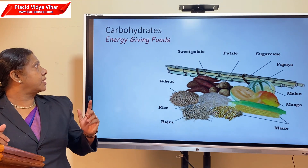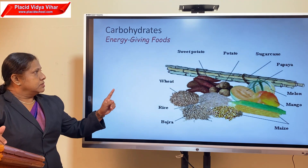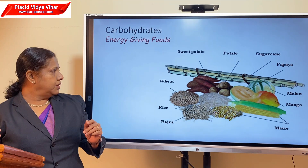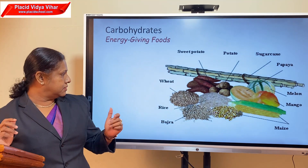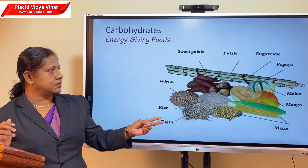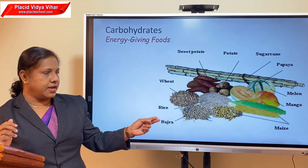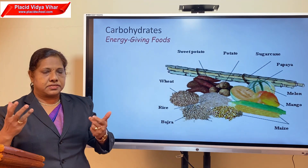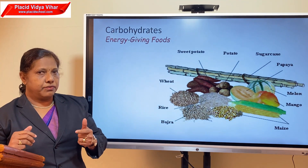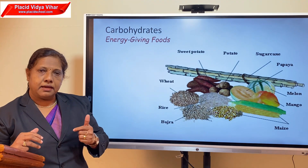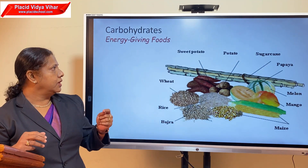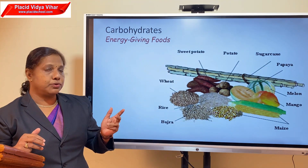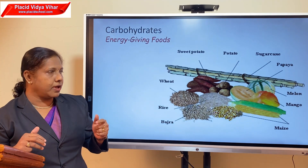Now we can see the sources of carbohydrates. Mainly we get carbohydrates from cereals. All of you know what cereals are — rice, wheat, bajra, maize; all these are different kinds of cereals. You take rice every day for lunch because it is a carbohydrate-rich food. Some vegetables like potato, sweet potato, and sugarcane also contain a lot of carbohydrate.